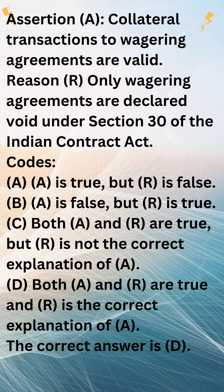Codes. A: A is true, but R is false. B: A is false, but R is true. C: Both A and R are true, but R is not the correct explanation of A. D: Both A and R are true and R is the correct explanation of A.